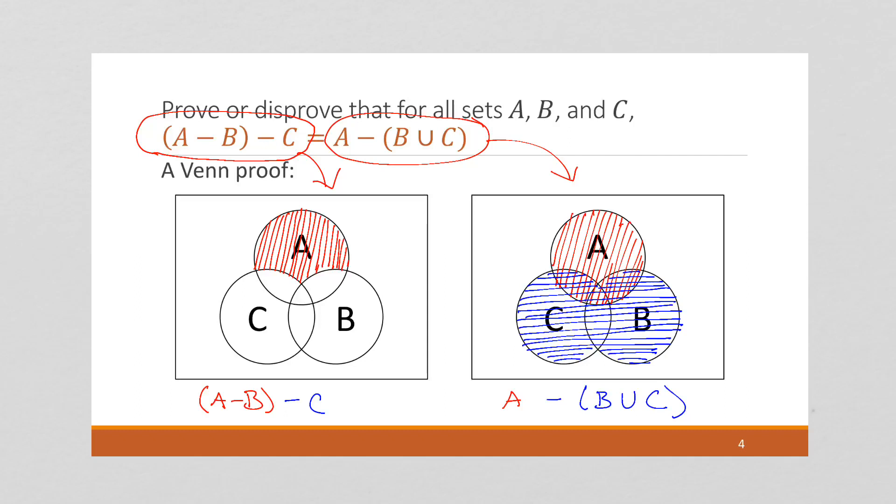And we want to subtract it from A, which means I'm going to erase everything that's blue. Here we go. And that is A minus B union C. And notice now our illustrations are the same.